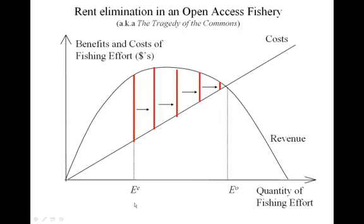The problem is that the economically efficient level of effort is not an equilibrium. Suppose you're a fisherman on shore watching others fish at the efficient level and making profits — much more than you earn sitting on the shoreline. You say, I've got a boat, I can go out there and make money too. So there's a natural tendency for effort to increase. Another boat is added, and then another, as long as profits can be made, until you reach a point where there are no more profits.